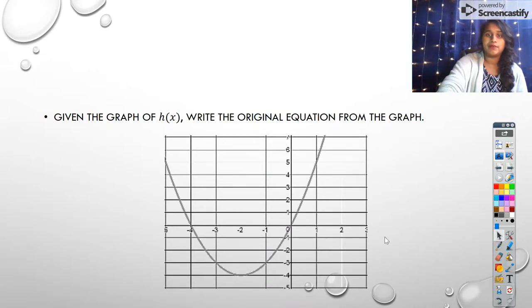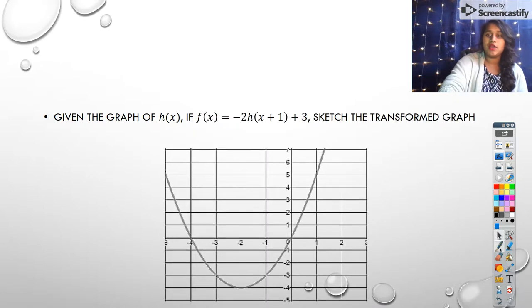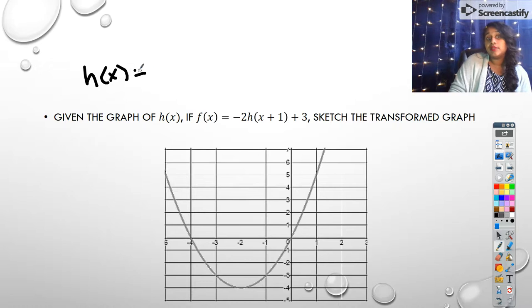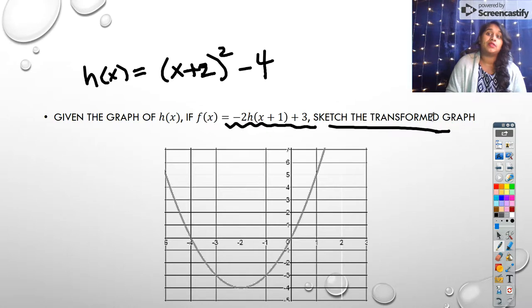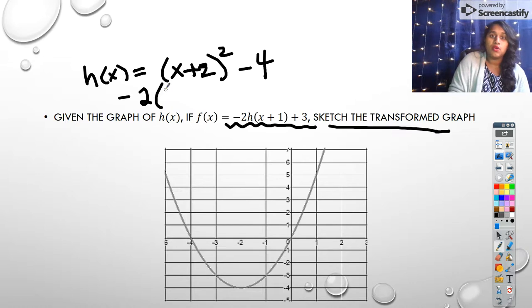But why did I want to know that? Well, if I know that my original function, my h of x, probably looks like something like x plus 2 squared minus 4, then I know I can plug it into this and figure out what the transformed graph is going to look like if it tells me to sketch it, right? So that becomes negative 2 times this whole h, except x plus 1,